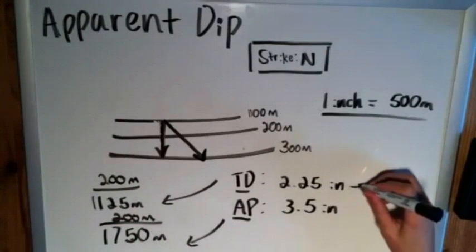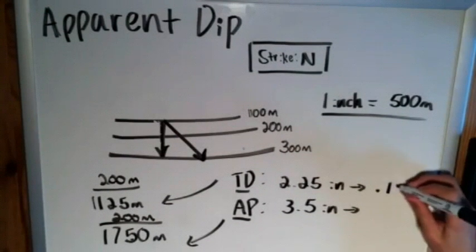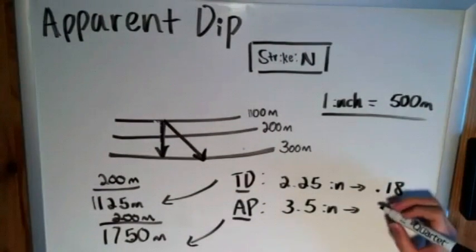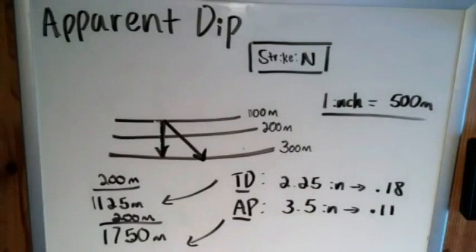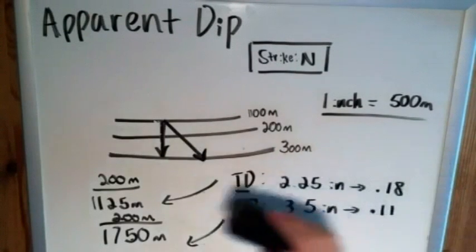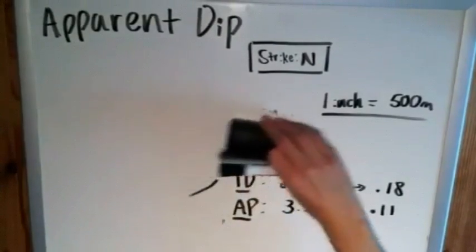And then we can write these as gradients which will be incredibly useful. So I'll just plug these into the calculator: 200 divided by 1125 is equal to roughly 0.18 and 200 divided by 1750 is equal to roughly 0.11. We're not being more precise once again simply for the sake of this example. Two significant figures should be good. Okay now I'm going to clear some space here and keep our final gradient numbers because here comes an equation.